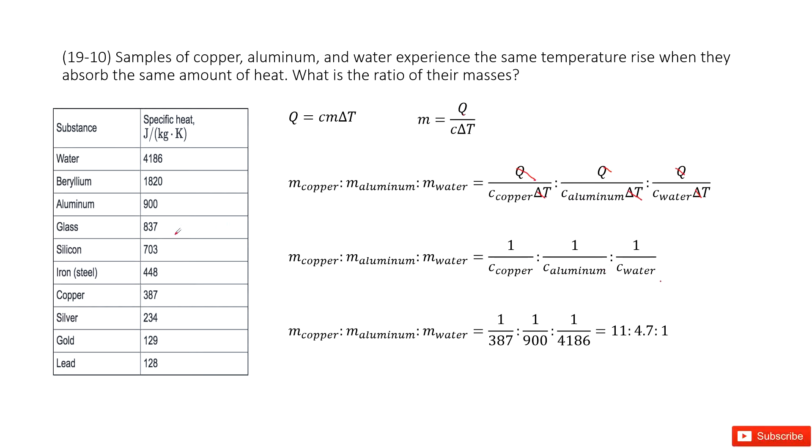And luckily, we have this chart, you can see. Then we can get the specific heat for copper, see there, 387. Aluminum specific heat, we check out the textbook there, 900.